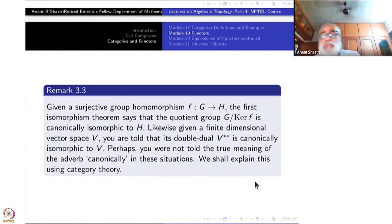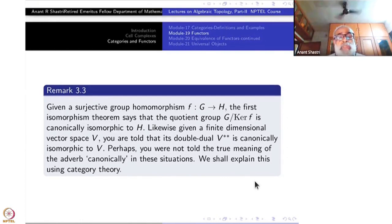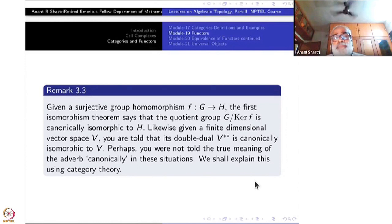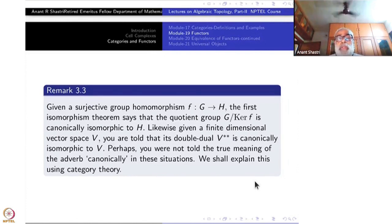Let me begin with the last remark from last time: given a surjective homomorphism from one group G to another group H, the first isomorphism theorem says that the quotient group G by kernel of F is canonically isomorphic to H. Likewise, given a finite dimensional vector space V, its double dual V double star is canonically isomorphic to V.